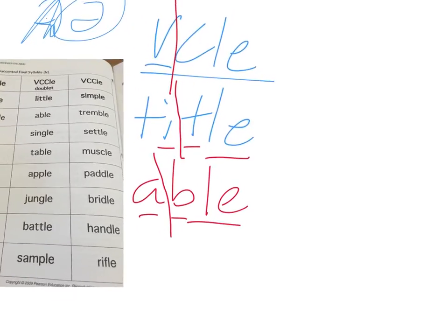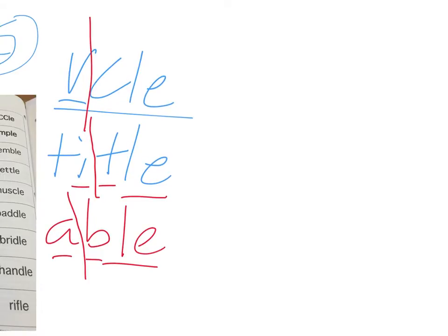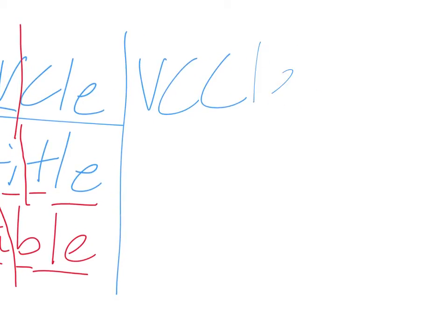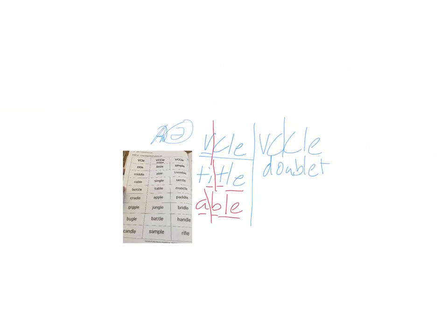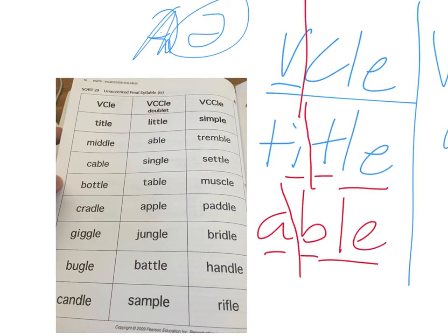We're going to go on to the next column now, which is V-C-C-L-E doublet. And that column is called doublet because that means that your two consonants are the same. V-C-C-L-E. And this one here is the doublet. The doublet column means that both of your consonants are the same.